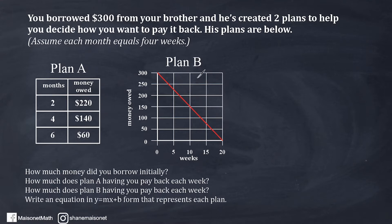And for Plan B, we see that at zero weeks you had $300 that you owed. Five weeks later, you owed right between $200 and $250, so it looks like $225. Ten weeks later, you still owe $150, and eventually at 20 weeks, you owe nothing. So this graph is definitely more detailed than this table.